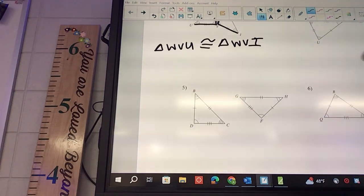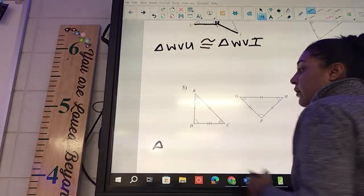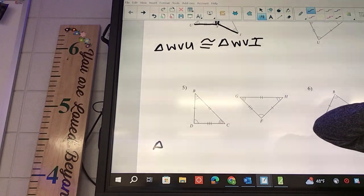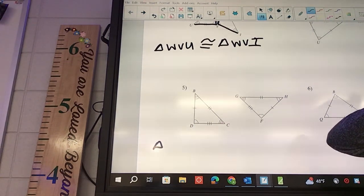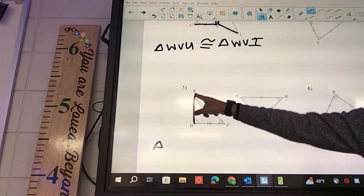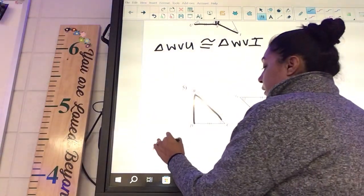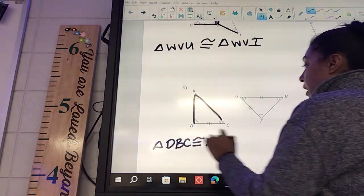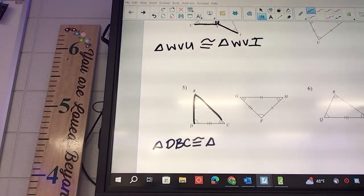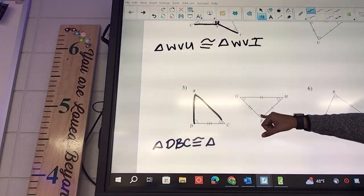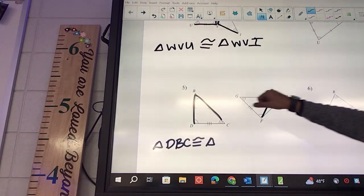Number five, we're going to say triangle - which one comes first on here? D to what then? D to B to C. Good. DBC is congruent to triangle. What about the second one, what comes first on the second one? F to H to G.